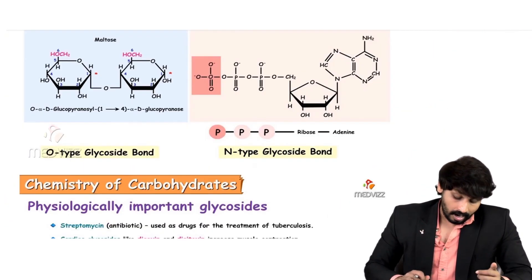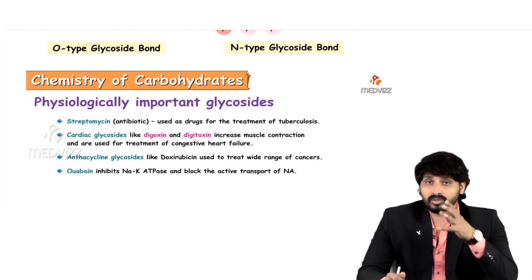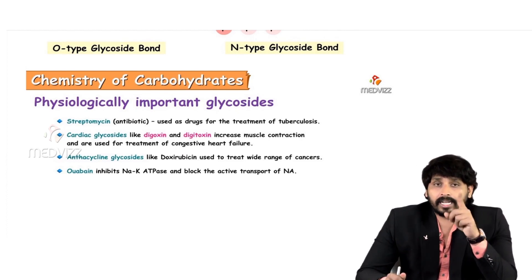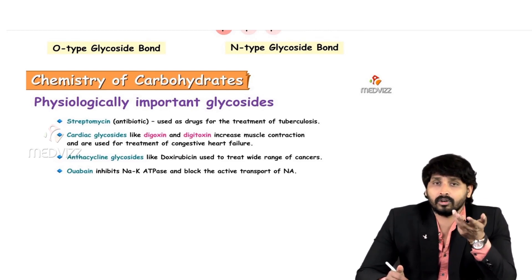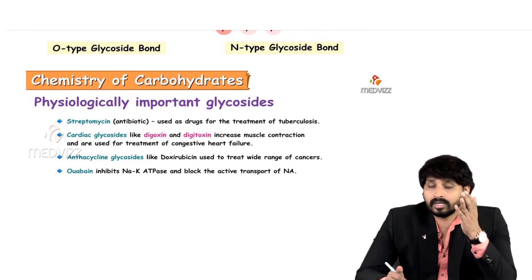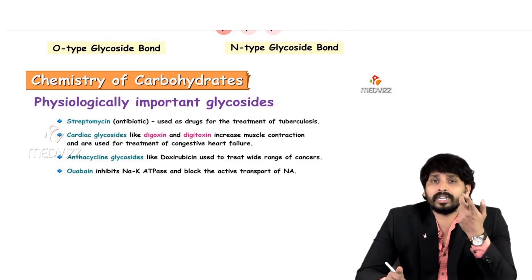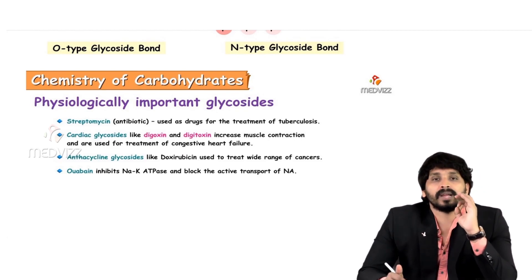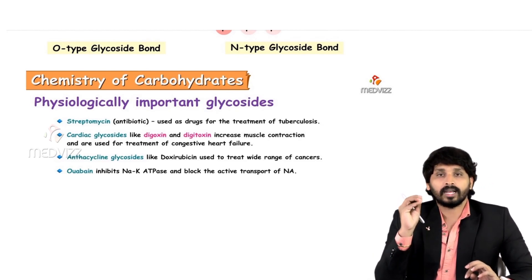Physiologically important glycosides include streptomycin, which is extensively used by physicians and clinicians as an antibiotic and is a prominent drug in the treatment of tuberculosis. Cardiac glycosides like digoxin and digitoxin increase muscle contraction and are used in the treatment of heart failure because they have extensive function on heart muscles. Anthracycline glycosides such as doxorubicin are used to treat a wide range of cancers as anti-cancer agents. Ouabain is a potent inhibitor of sodium-potassium ATPase and blocks the active transport of sodium. These are the important clinical points regarding glycosides.